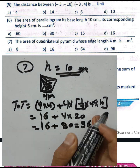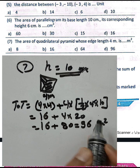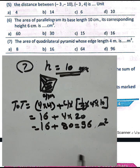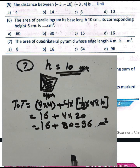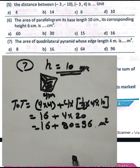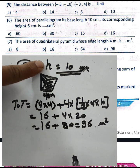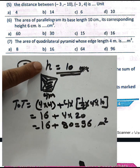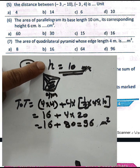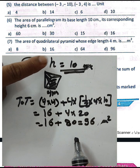The result is 96 square meters, choose letter D. Note: you must complete the height information in the example — the height must be given in the question.